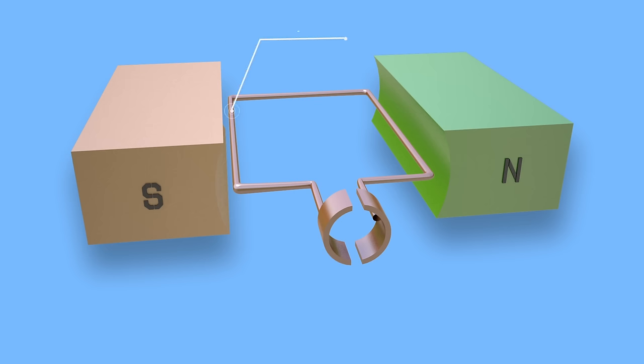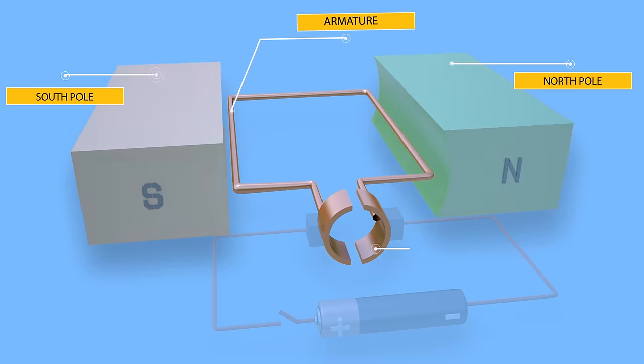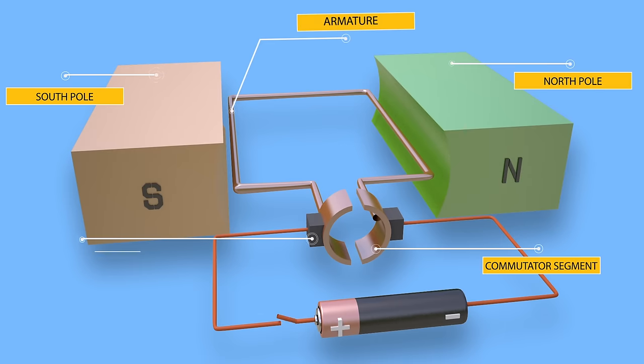The very basic construction of a DC motor contains a current carrying armature, which is connected to the supply through commutator segments and brushes. The armature is placed between north and south poles of a permanent or electromagnet in this elementary model.